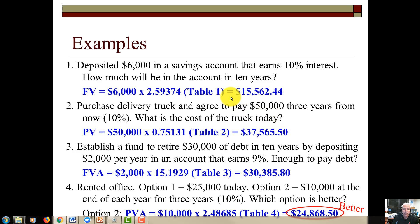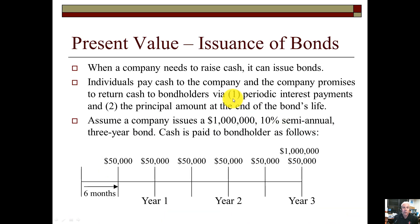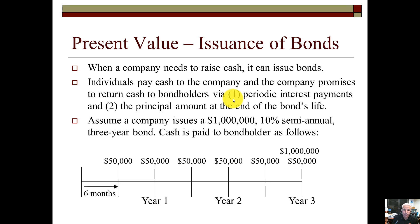Now we're going to apply these concepts to how companies issue bonds and the present value of a bond. The only type you need to worry about for a bond is present value. We're only going to be doing the present value of both subtypes — the present value of a single amount and the present value of an annuity.